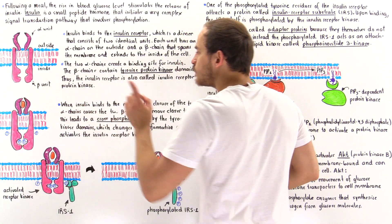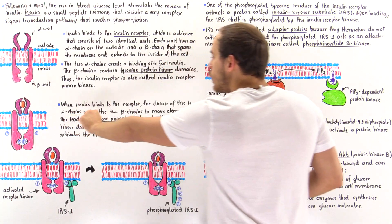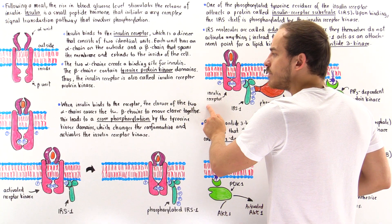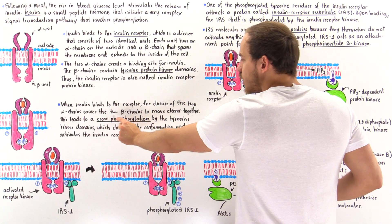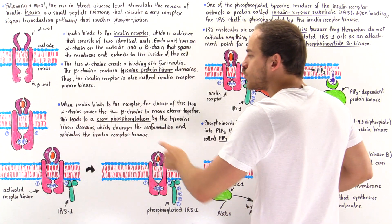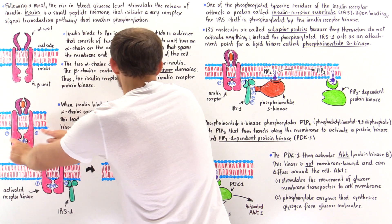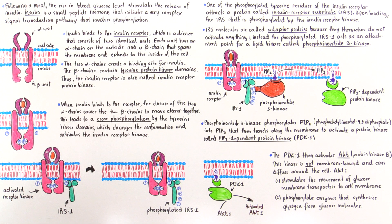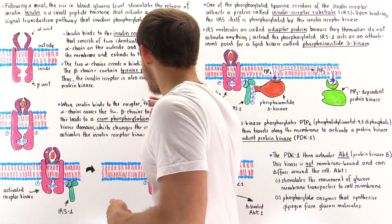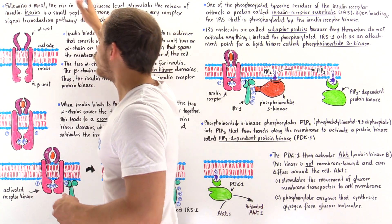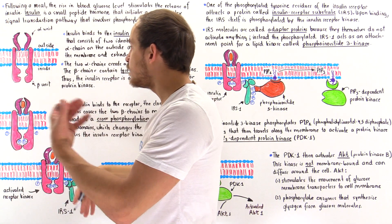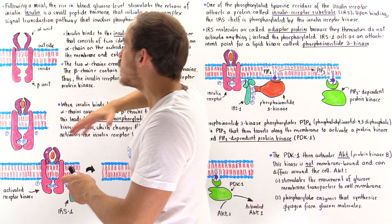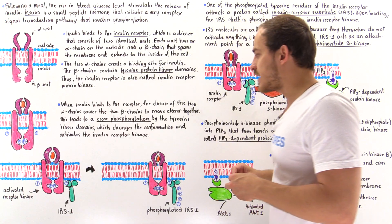So once again, when the insulin primary messenger — a peptide hormone — moves into its cavity created by the two alpha subunits, the closure of the two alpha chains causes the two beta chains to move closer together. This leads to cross-phosphorylation that changes the conformation of those beta subunits and activates them. We see the binding of insulin on one side of the receptor activates it on the other side, so the signal can be transduced — passed down from the outside to the inside of that cell.